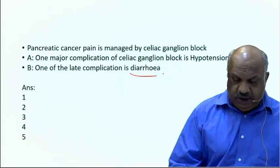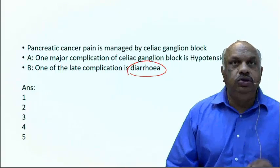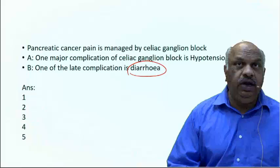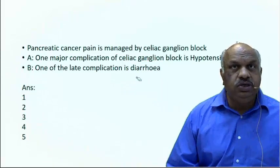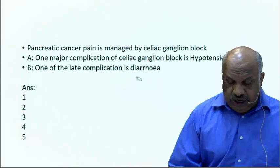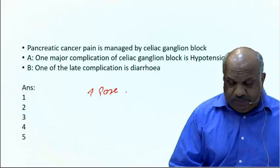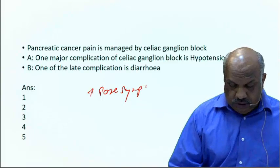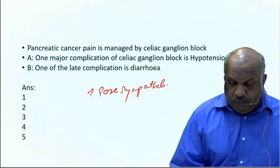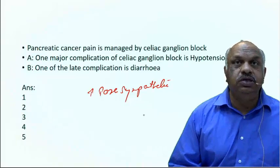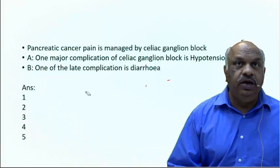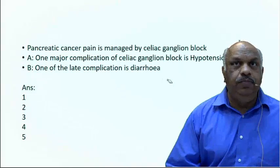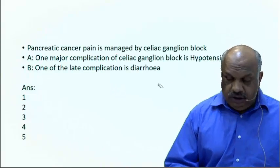Assertion A is a correct statement. Assertion B: one of the late complications is diarrhea, which is also a correct statement. Diarrhea occurs due to sympathetic block — when the sympathetic system is blocked, there is overactivity of the parasympathetic system, which gets activated and leads to diarrhea.